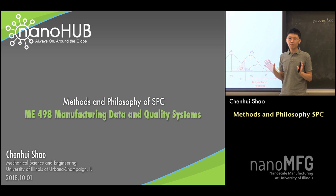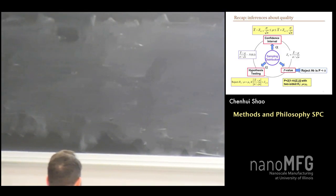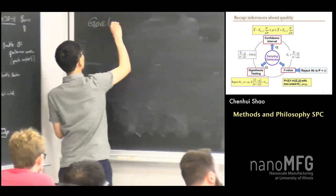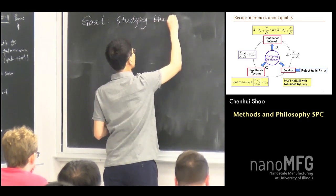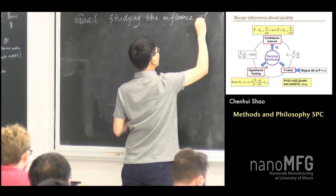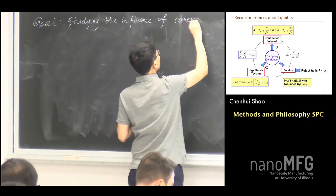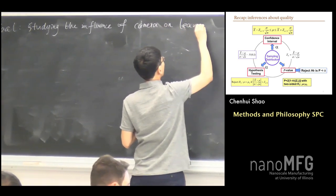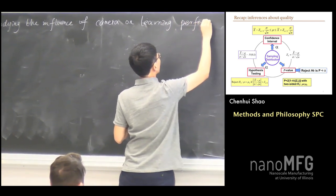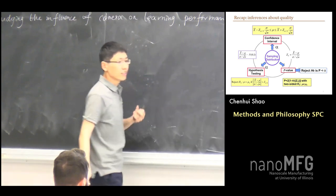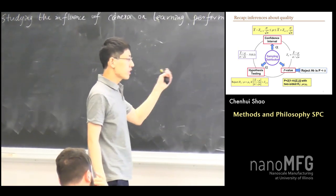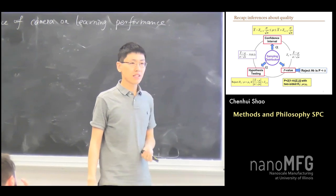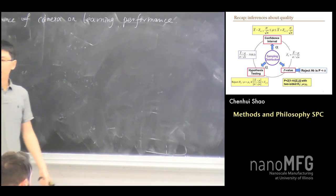Nanohub.org: online simulation and more for nanotechnology. My goal is starting the instruments. This is my goal. First of all, let's choose one tool from these three. Do you want to use a confidence interval, hypothesis testing, p-value, or other tools we have discussed in earlier lectures? Which one do you think is reasonable to use?